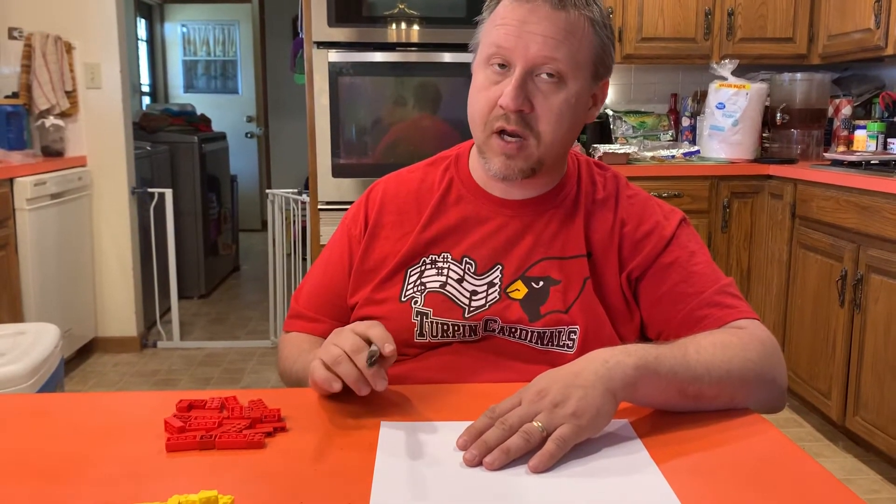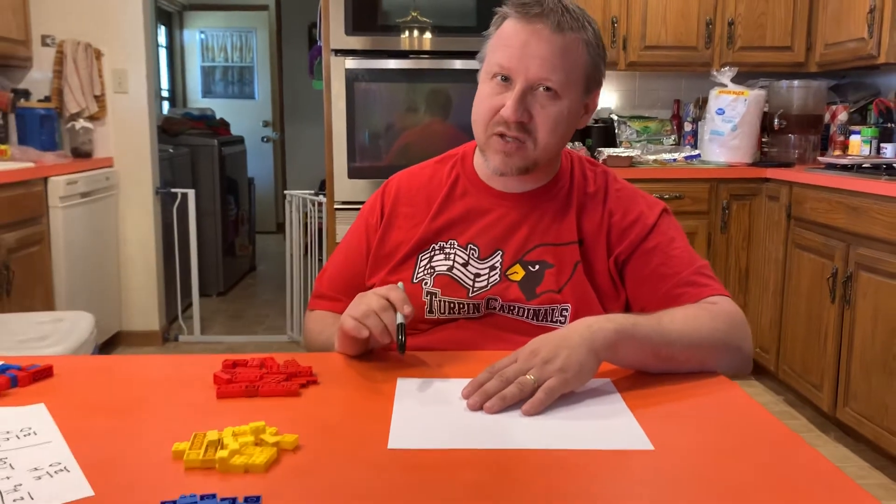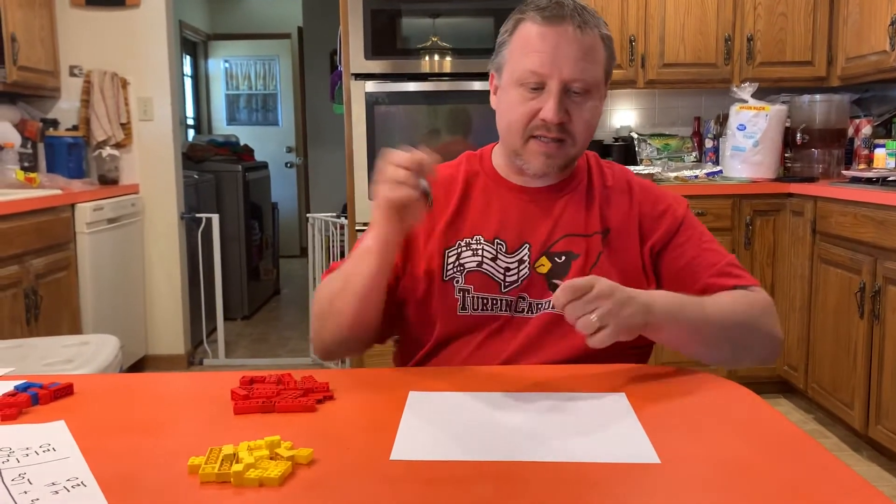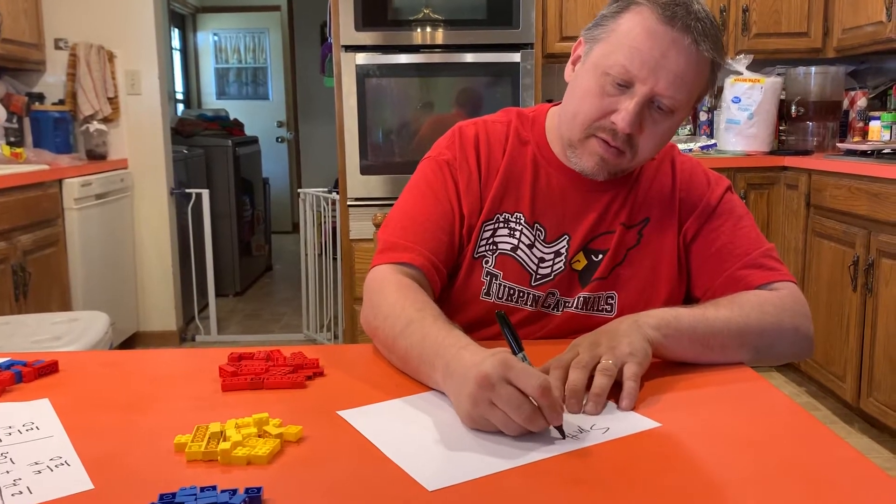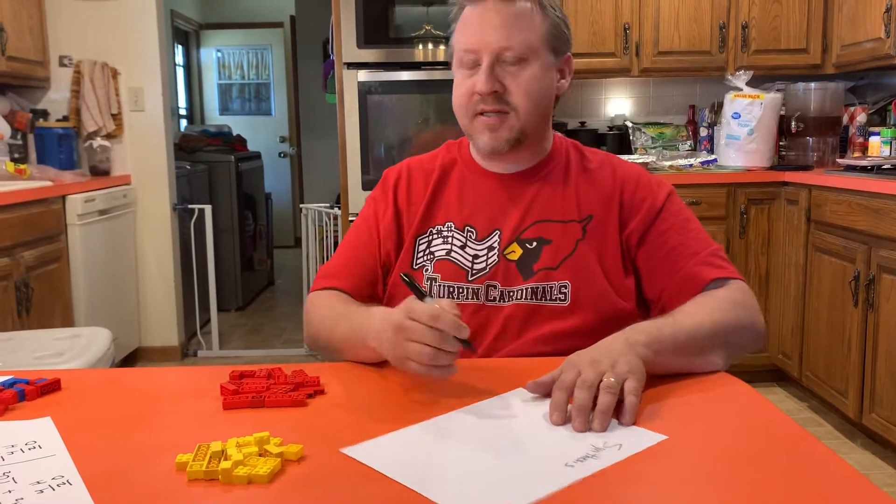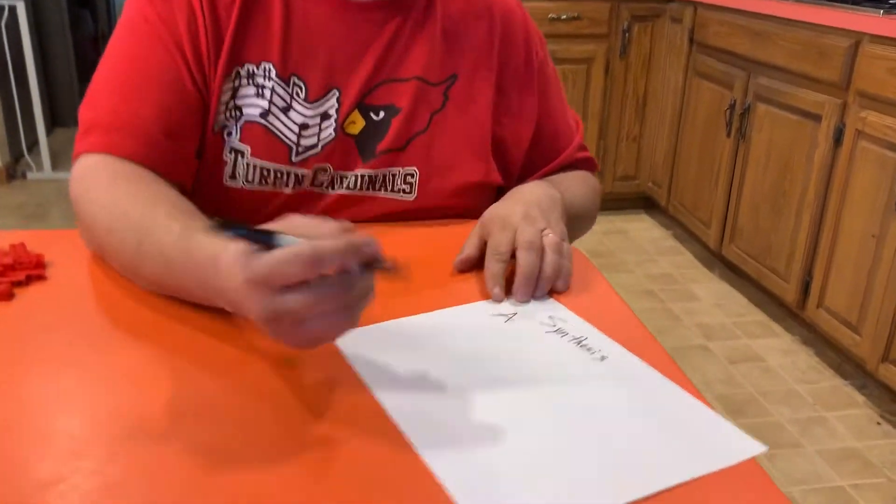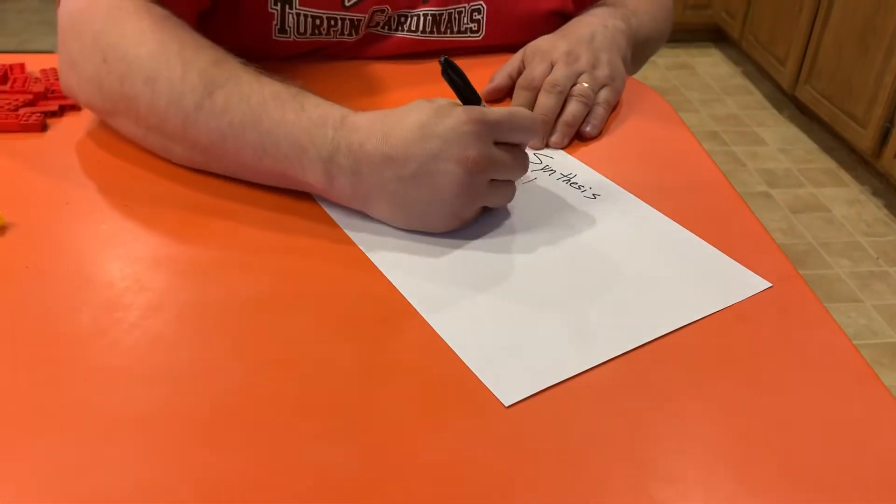Alright, we're gonna do some chemical equations. The first one that we're gonna do is called a synthesis reaction. Now synthesis, I'm gonna write it down. Synthesis is very simple. The basic idea is A plus B, and then for your product you end up with AB.